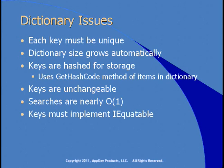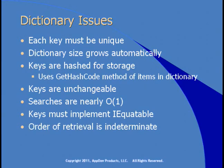Key objects must implement IEquatable. We'll use strings, numbers, and simple values for our keys, and they all implement IEquatable. If you create a class and use it as a key, it has to implement IEquatable so the dictionary can find and compare key values. The order of retrieval is indeterminate in a dictionary — if you care about the order, you need to use a different data structure.